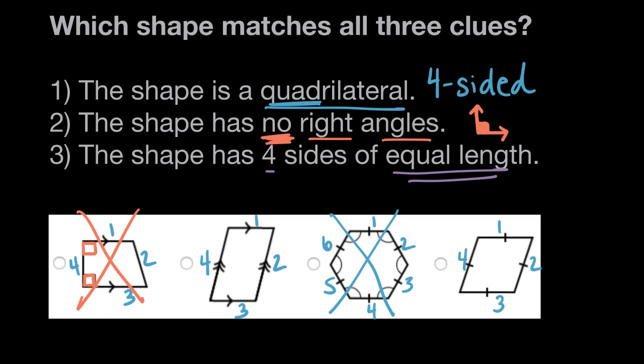Looking at this first one that we have left, shape two, it looks like these sides on the ends are shorter than the sides going up and down. So it looks like they are not equal length, so we can rule this one out.